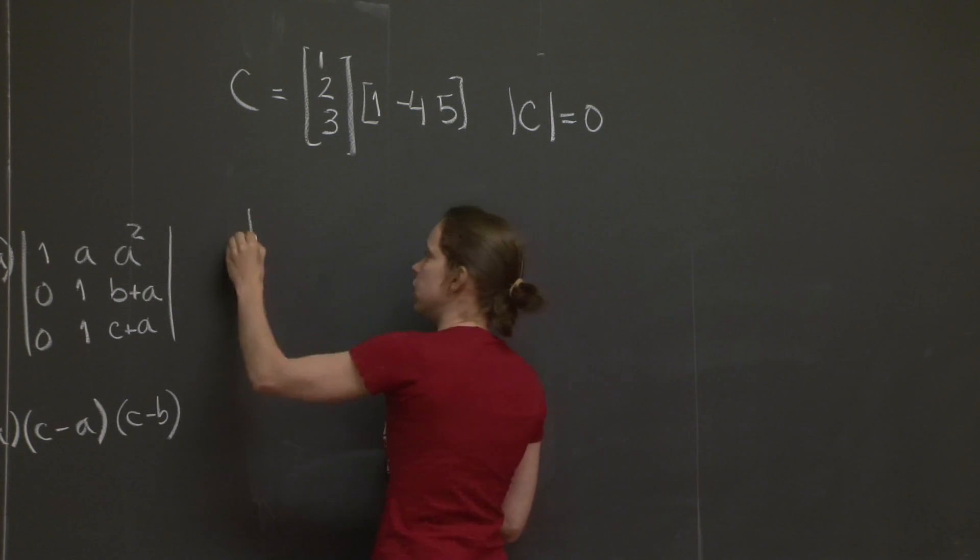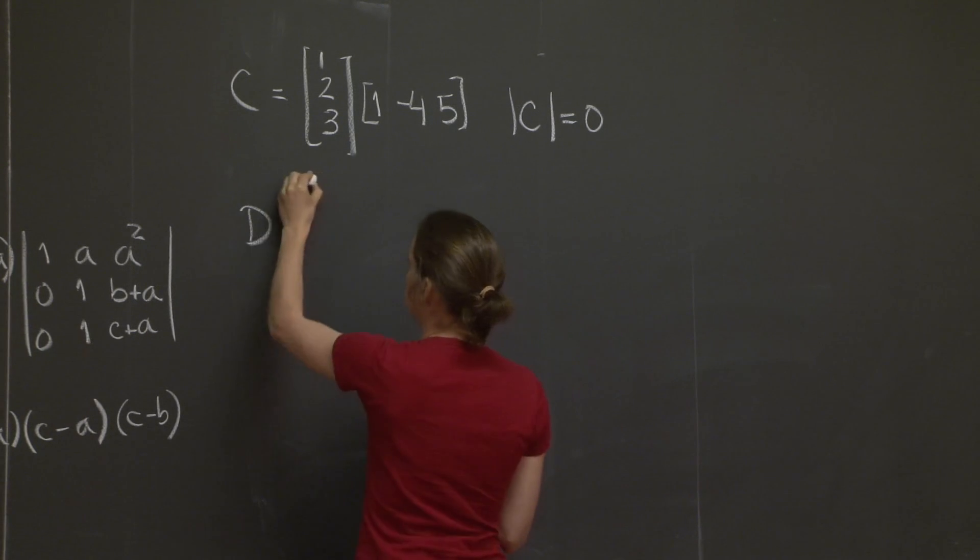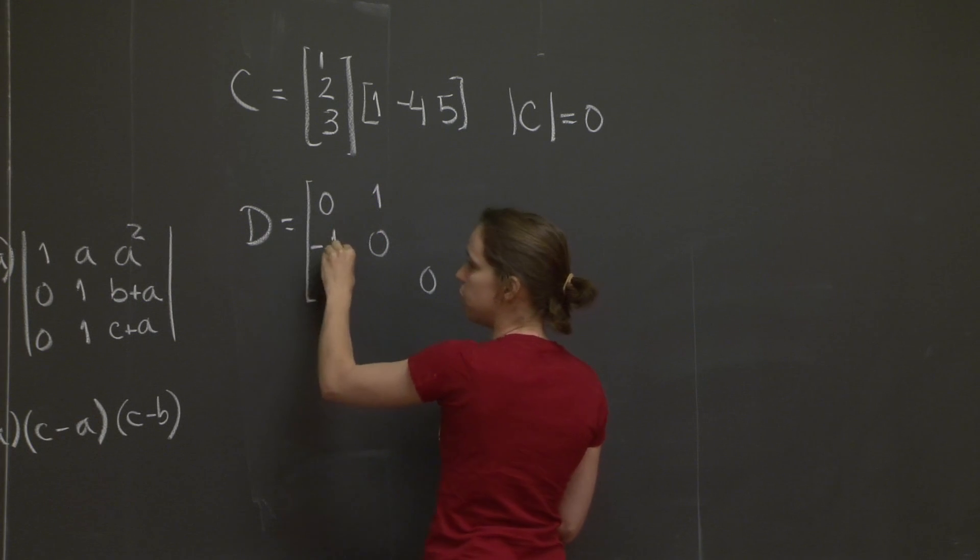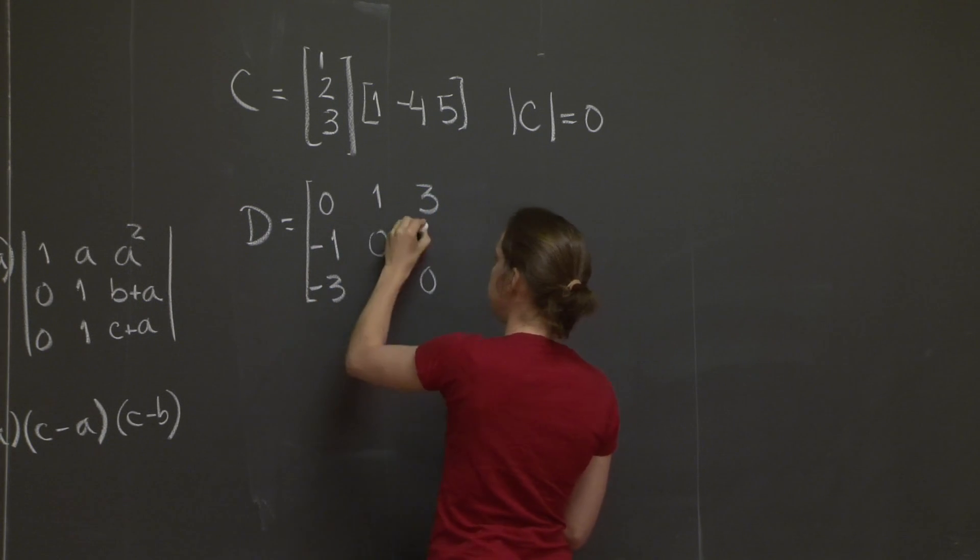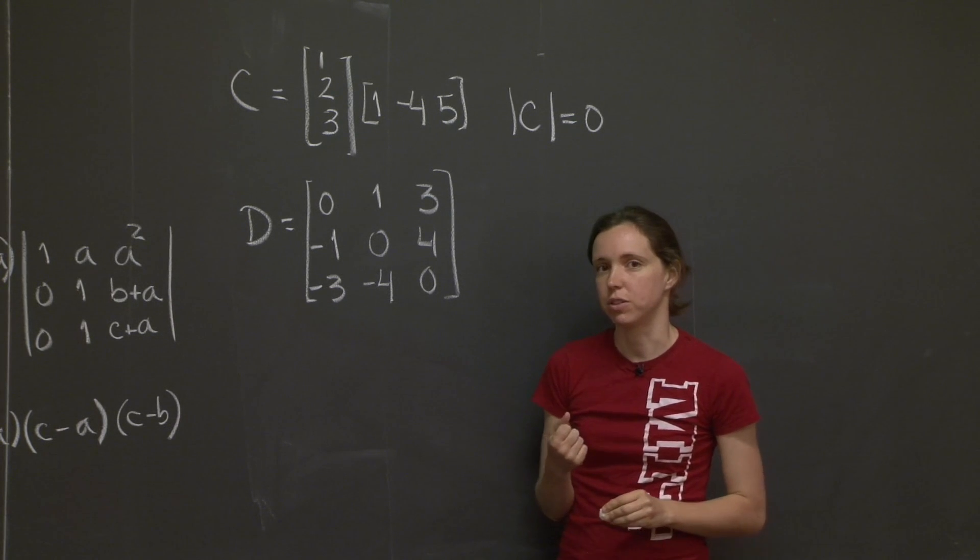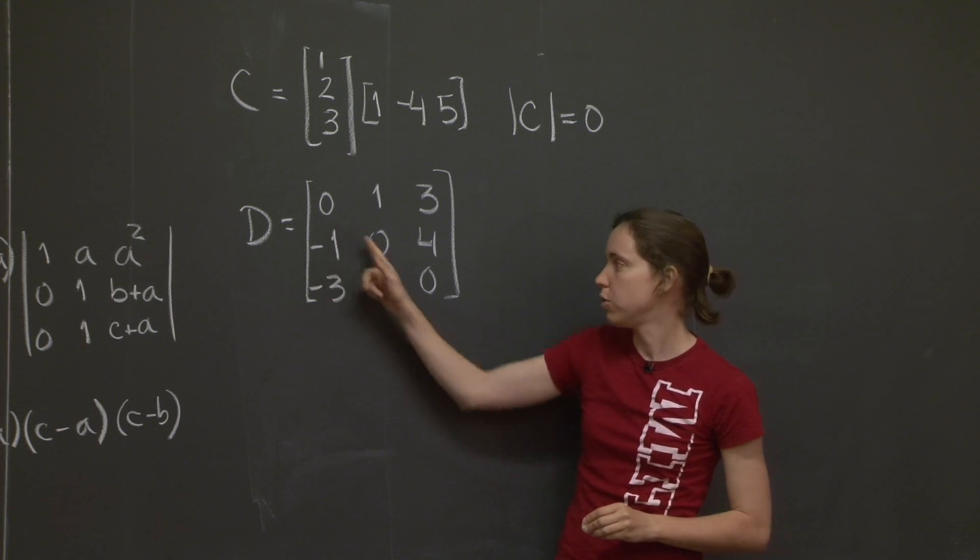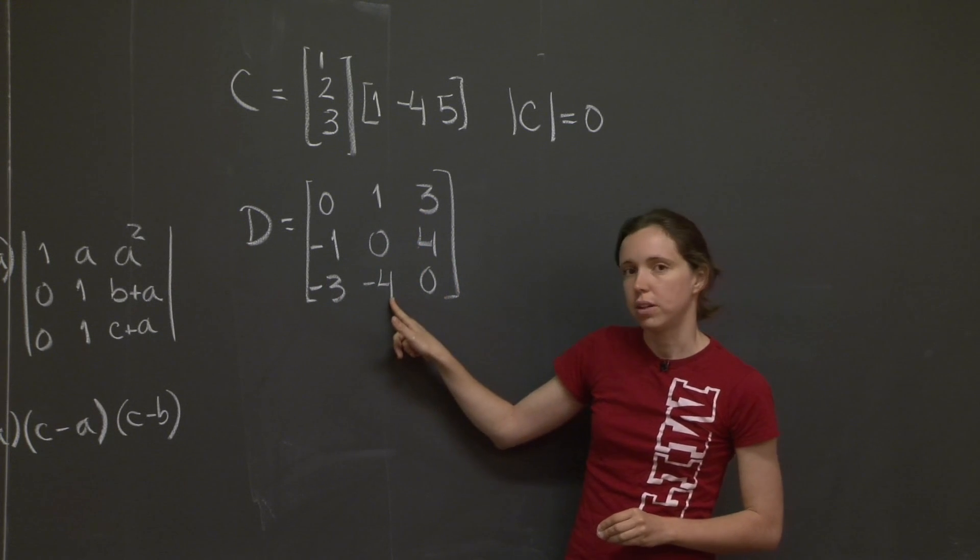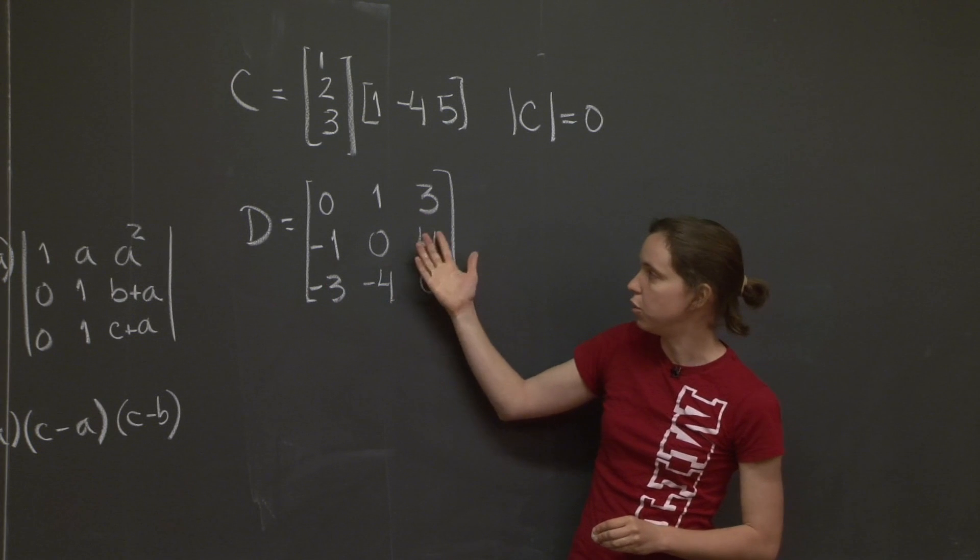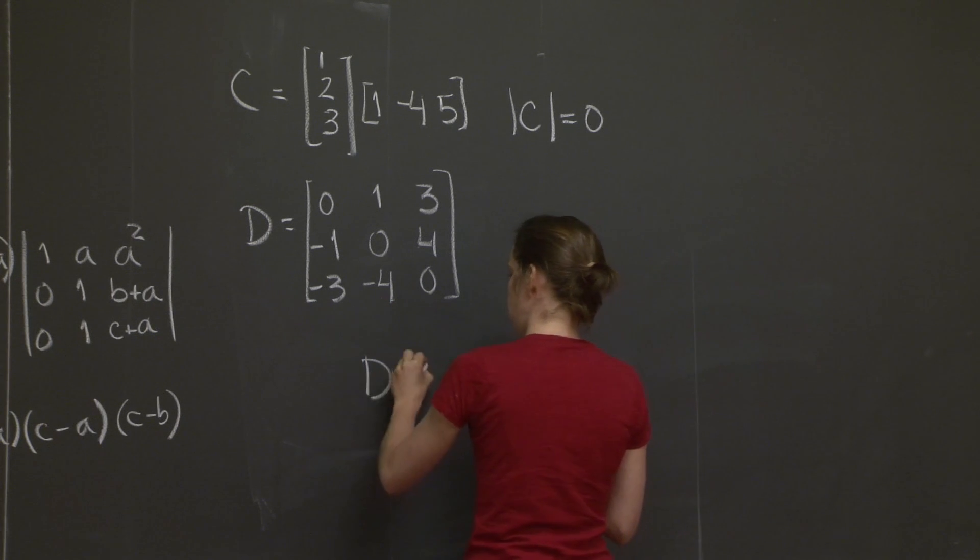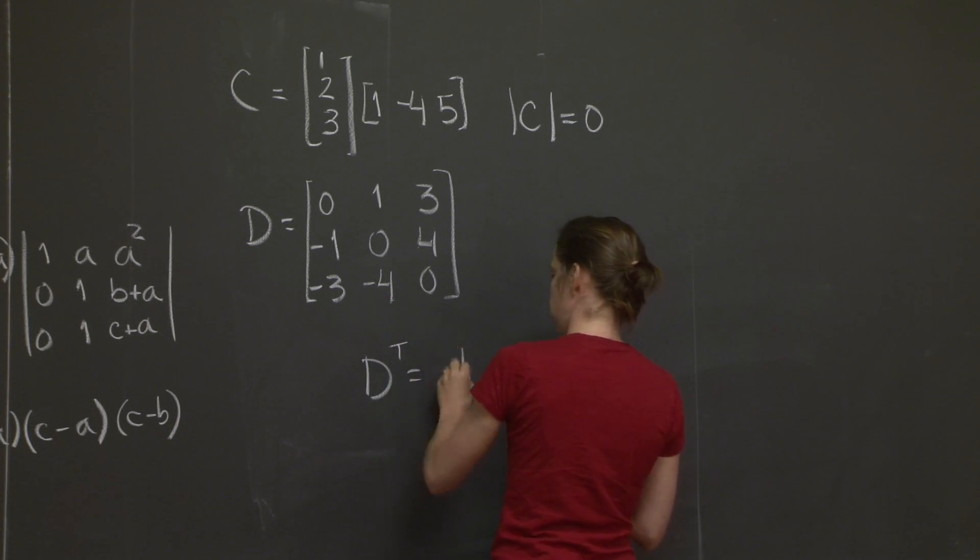On to the next matrix, last one. D is equal to 0, 1, 3, minus 1, 0, 4, minus 3, minus 4, 0. Maybe you didn't get that from just looking at the matrix in the first time, but did you see how I wrote it down? I have 0's down the diagonal, and then for each entry I have minus that entry. That means that this matrix is skew symmetric. What that means is that if you do D transpose, it will not be equal to D, but it will be equal to minus D.